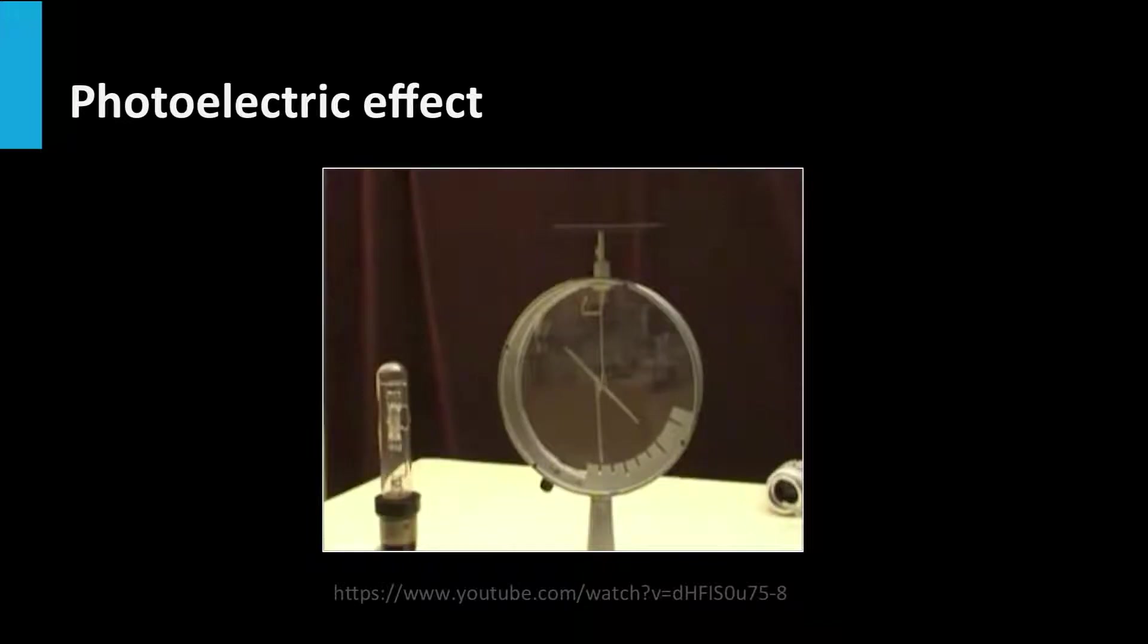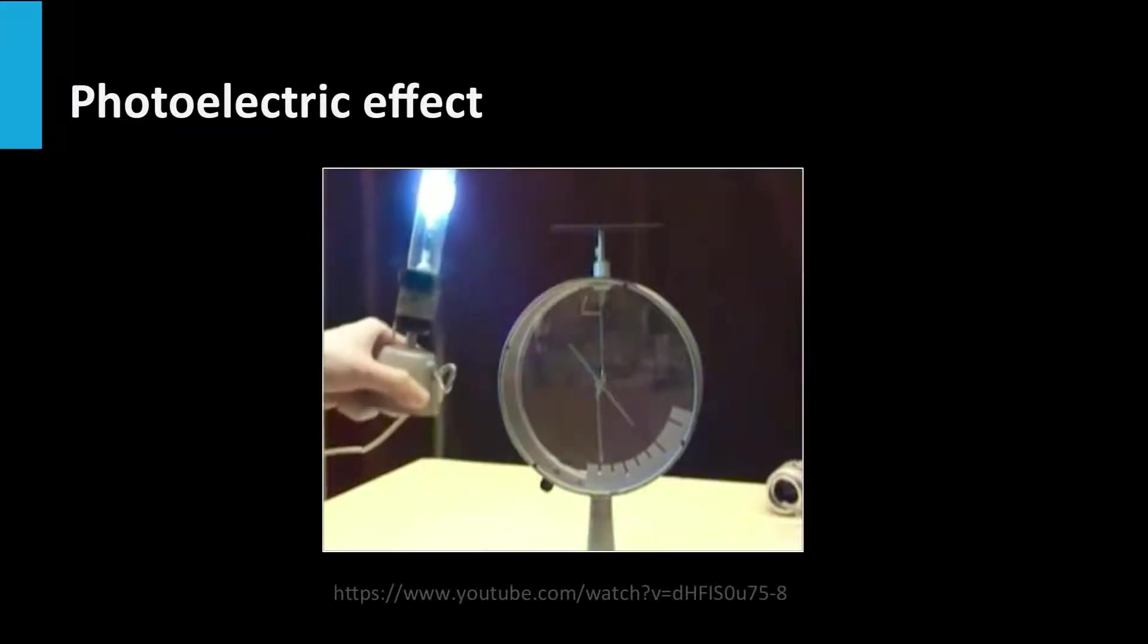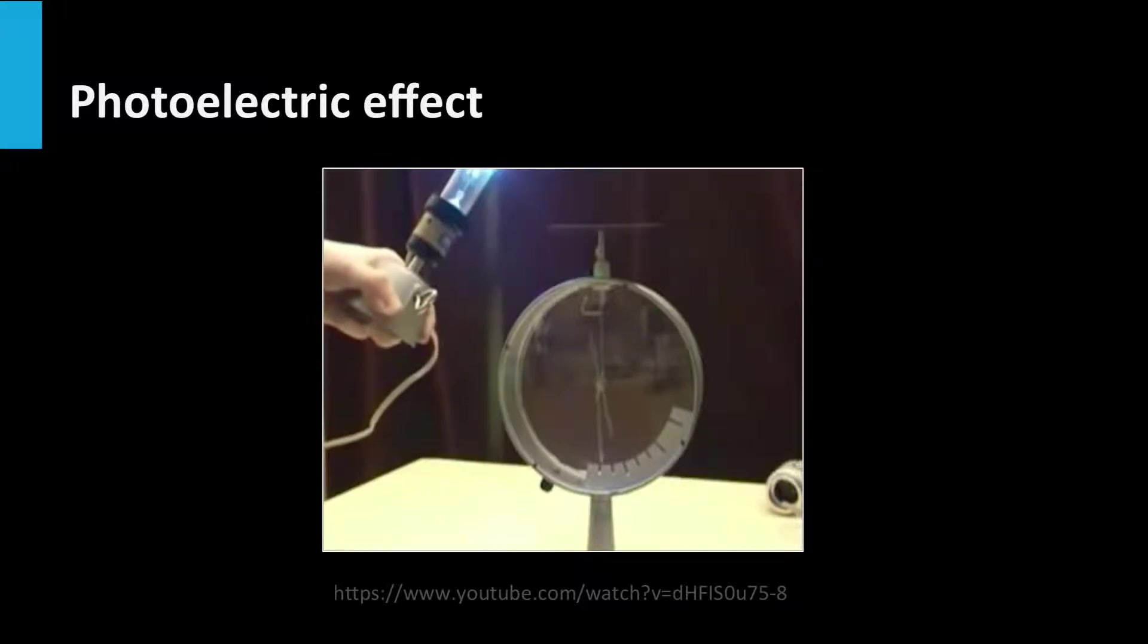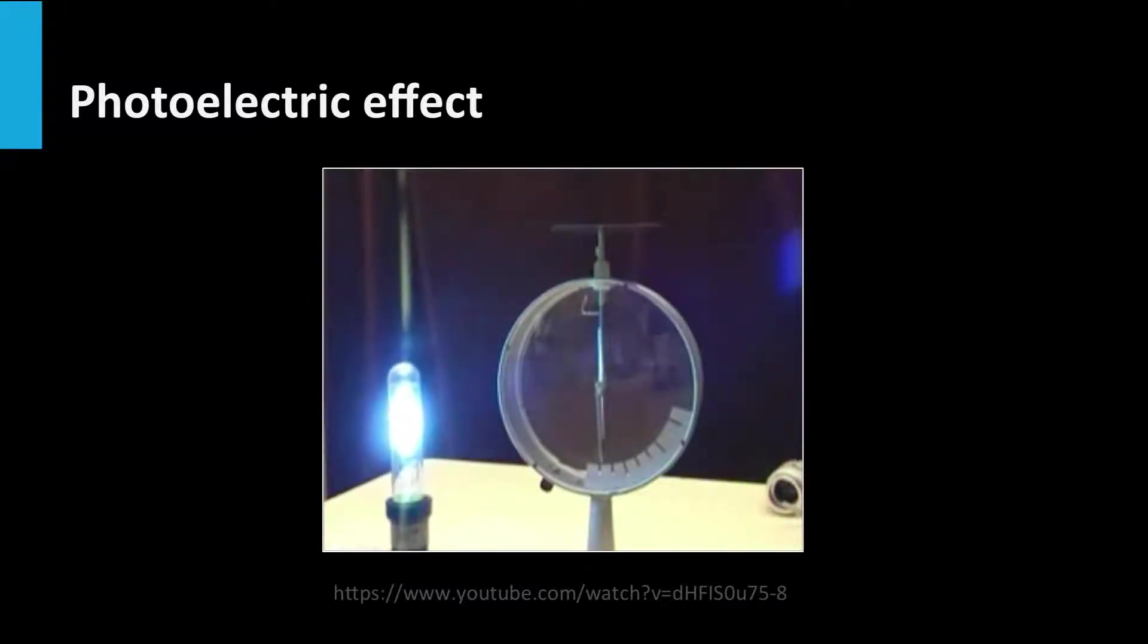The only way to discharge the electroscope very fast is by putting it in contact with other materials. For the moment we are waiting until the mechanical fluctuations of the electroscope are damped. Now the bar is illuminated with the lamp. What we see is that the light is able to remove the charges very fast. If you repeat this experiment with reddish light, this effect does not occur. It only occurs for bluish and ultraviolet light.